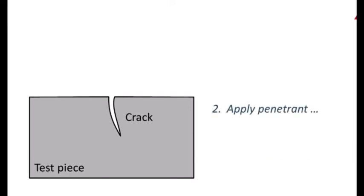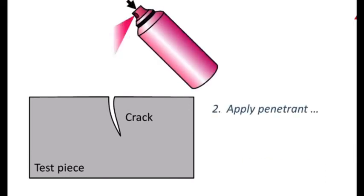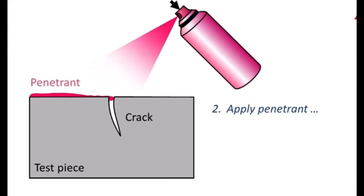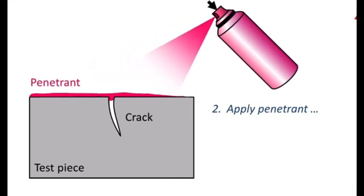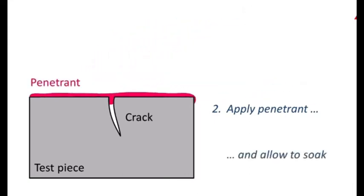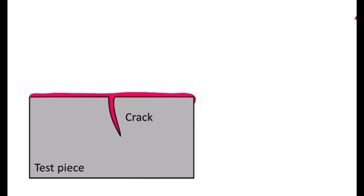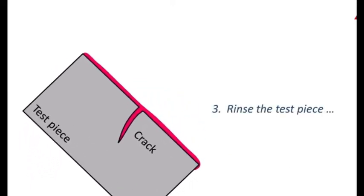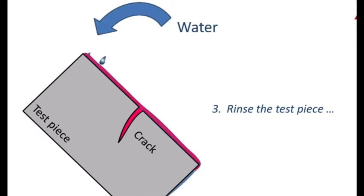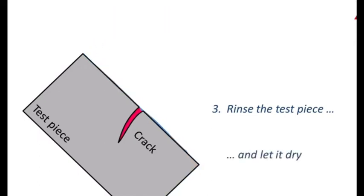In the second step, the penetrant is applied to the test piece — usually a red-coloured, low-viscosity oil. Due to the penetrant's high surface wetting capability, it penetrates into the defects and cracks. After several minutes of dwell time, the third step is to rinse the part's surface cautiously with water. The water removes the penetrant completely from the surface but leaves it in the crack.